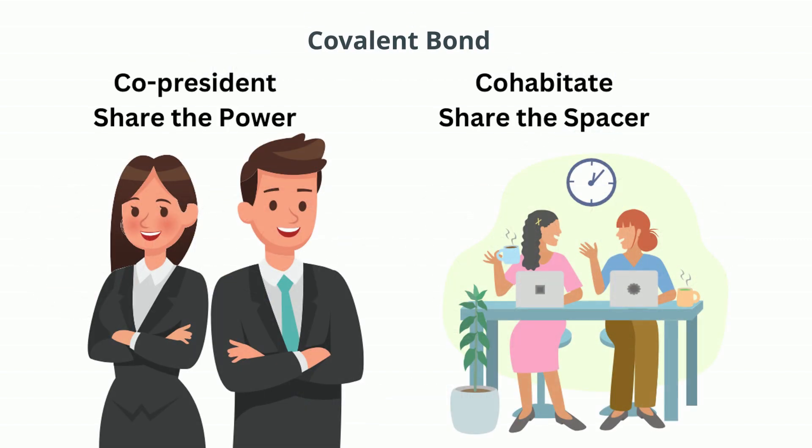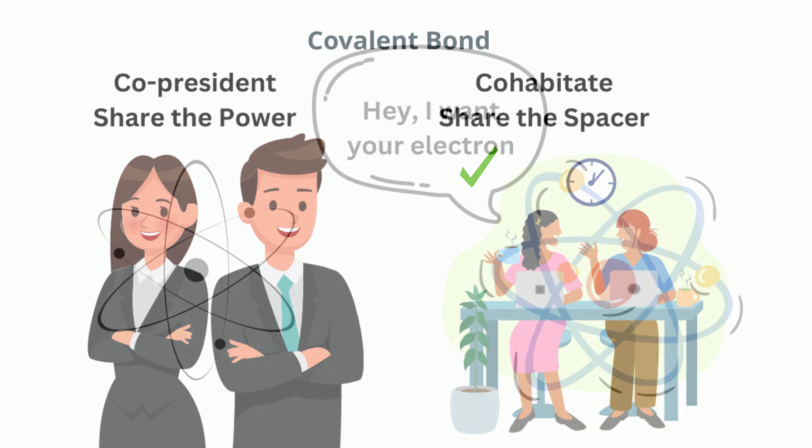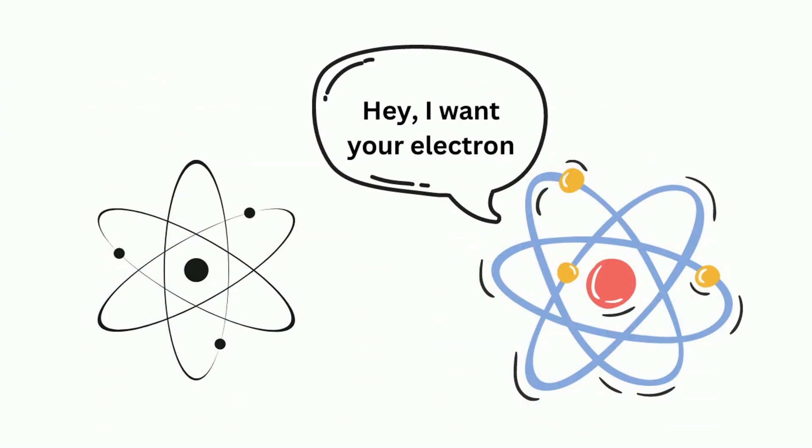With a covalent bond, I think of co-presidents, which share the power, or you cohabitate with someone so you share a space. And with ionic, I think, I want your electron, which results in an ion.